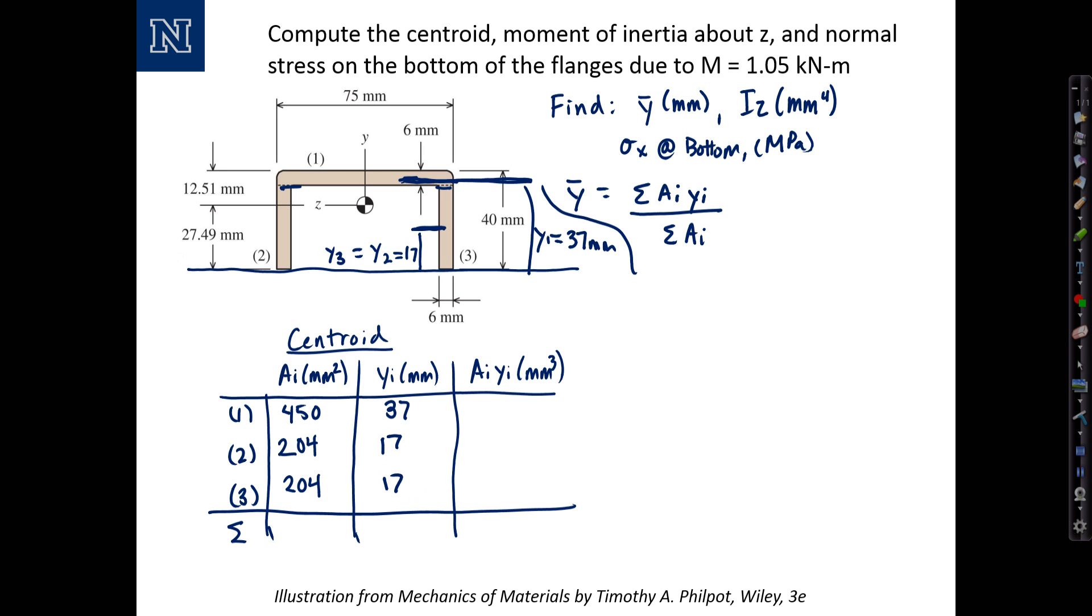Now I'll take the product of everything. 450 times 37 is 16,650. 204 times 17 is 3,468. And I'll replicate it here, 3,468. Now in the first column, I'm going to sum all the areas, which is 858. In the third column, I'm going to sum all the a sub i times y sub i, which is 23,586.